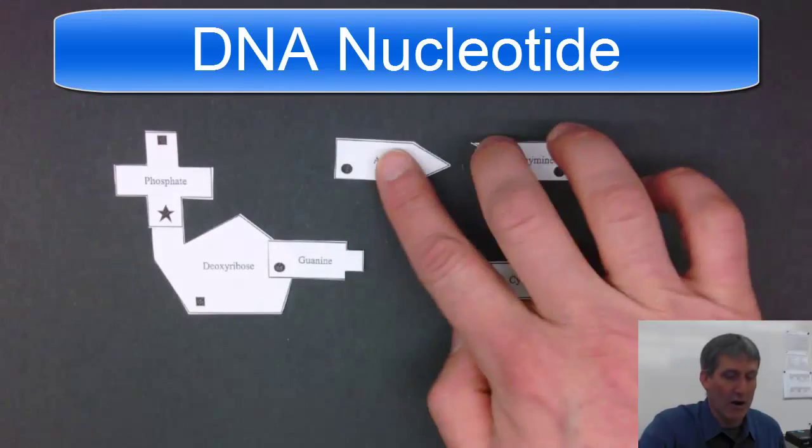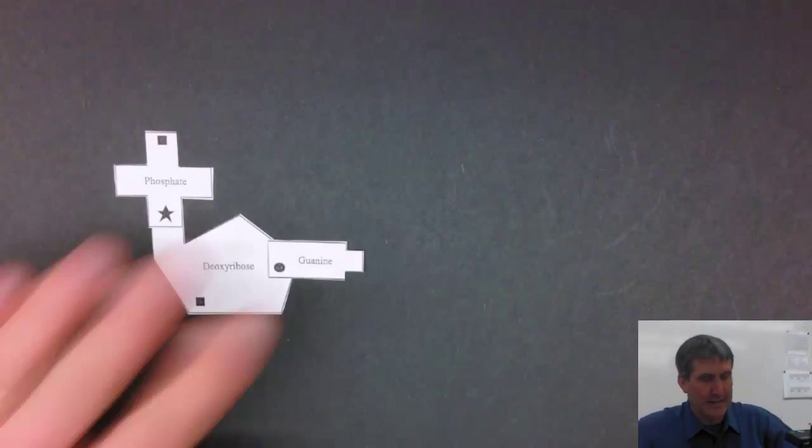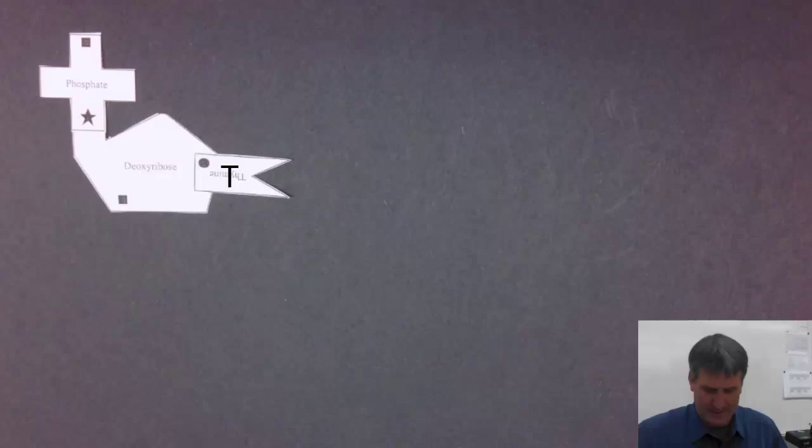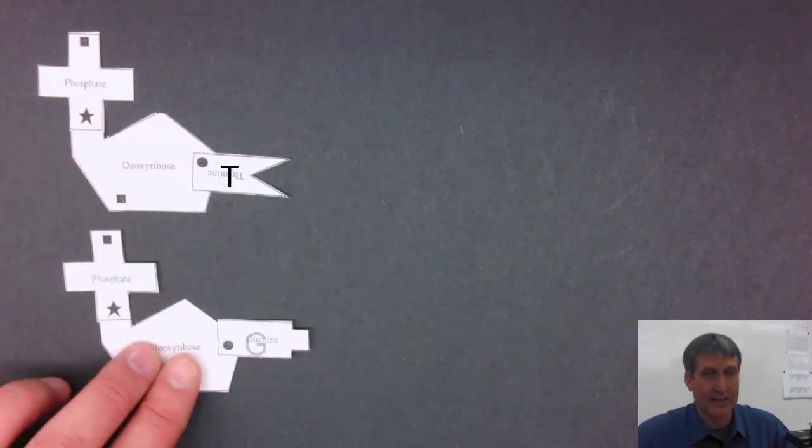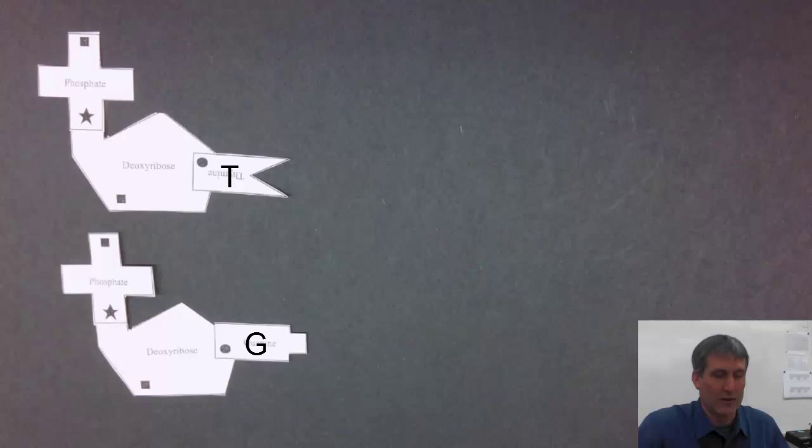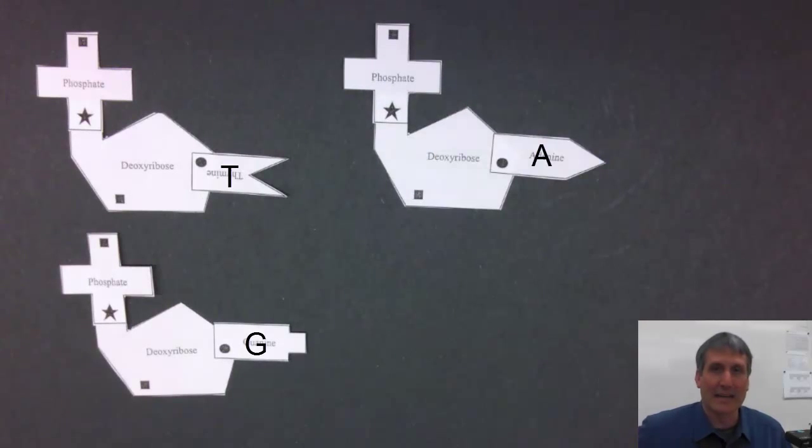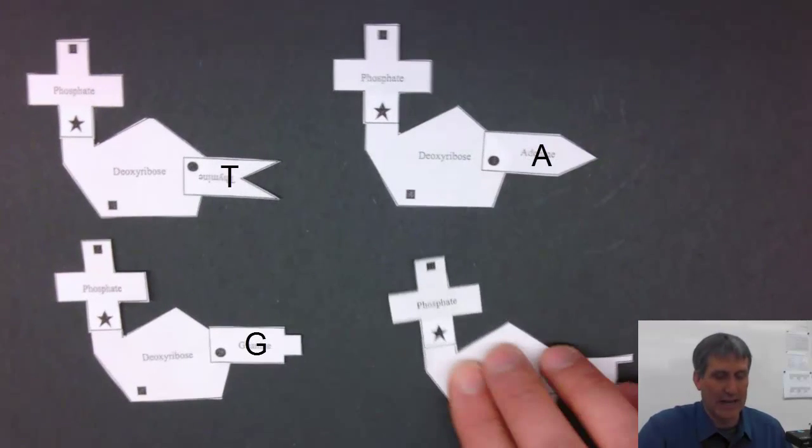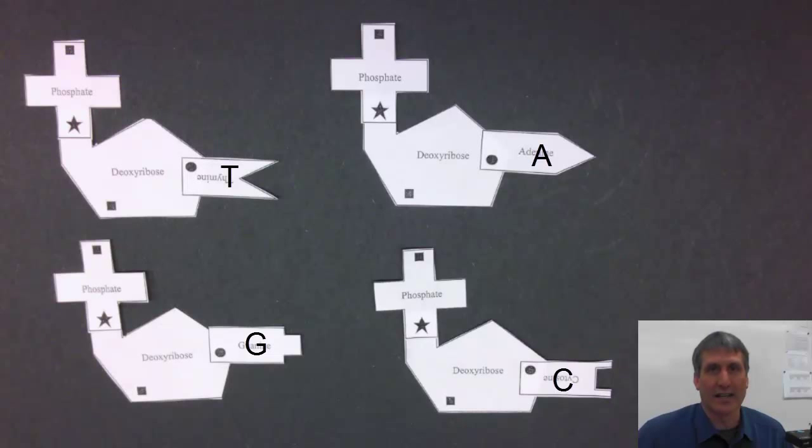So there are four different types of nucleotides that you can have. You can have a nucleotide with a thymine base, a nucleotide with a guanine, a nucleotide with an adenine, or a nucleotide with a cytosine.